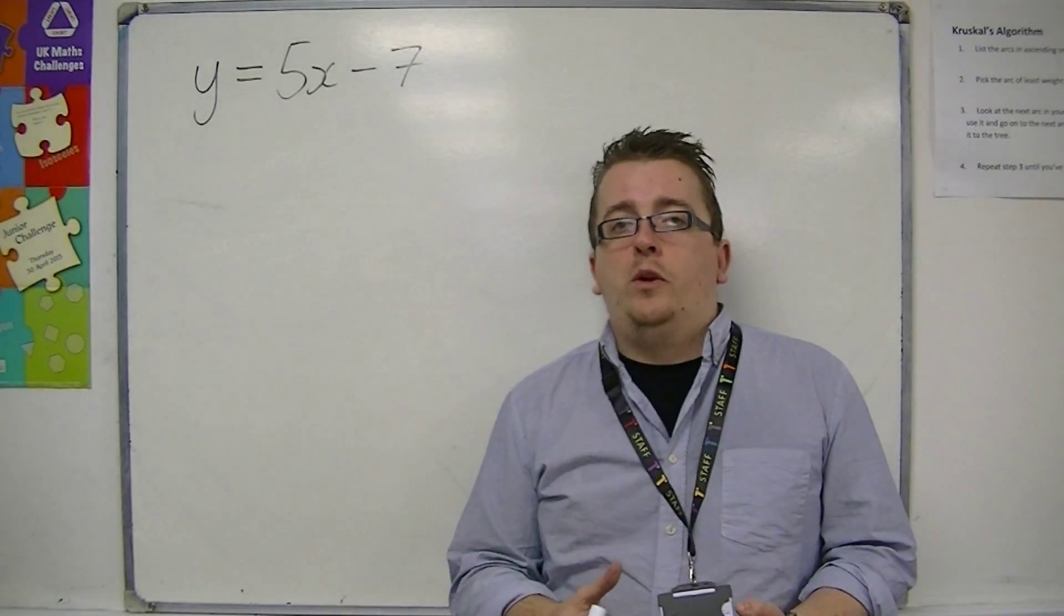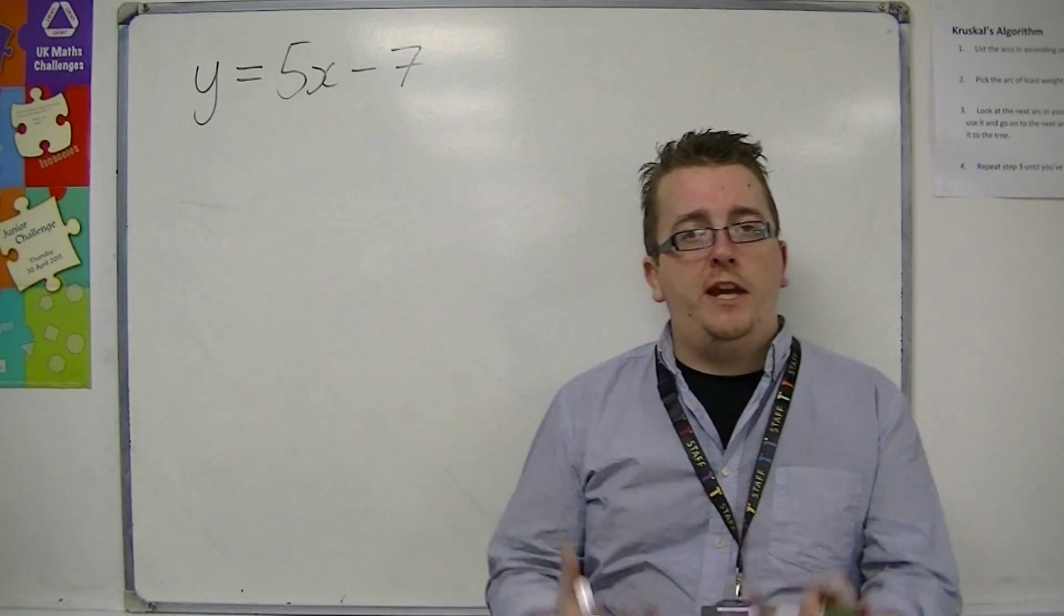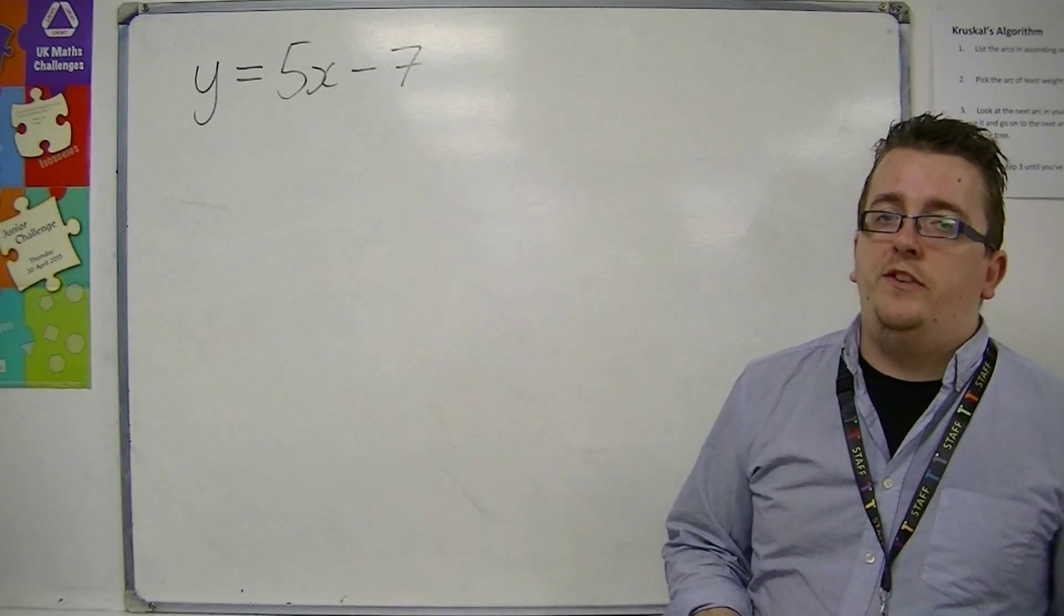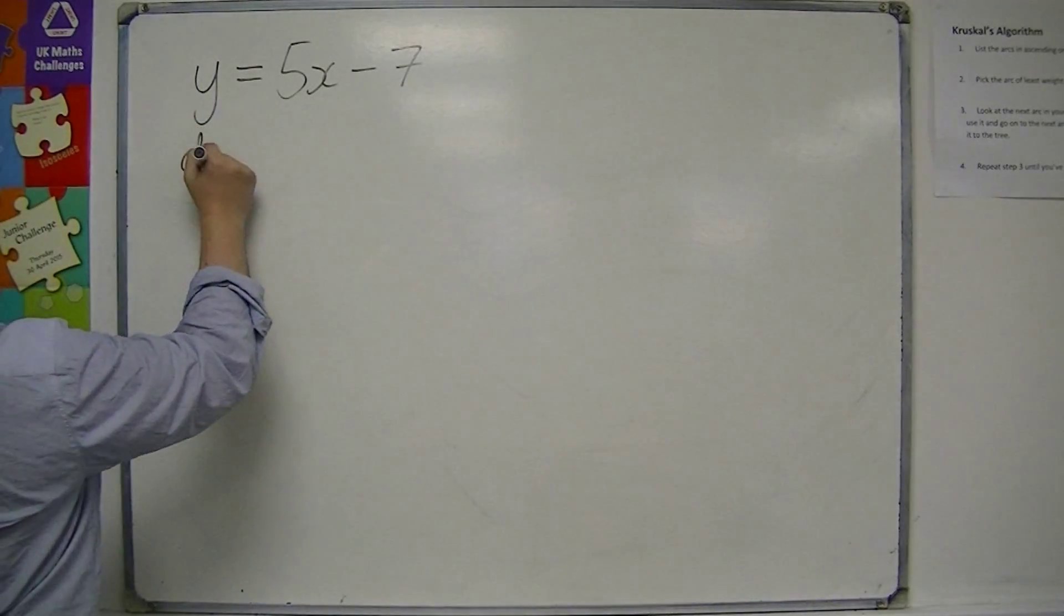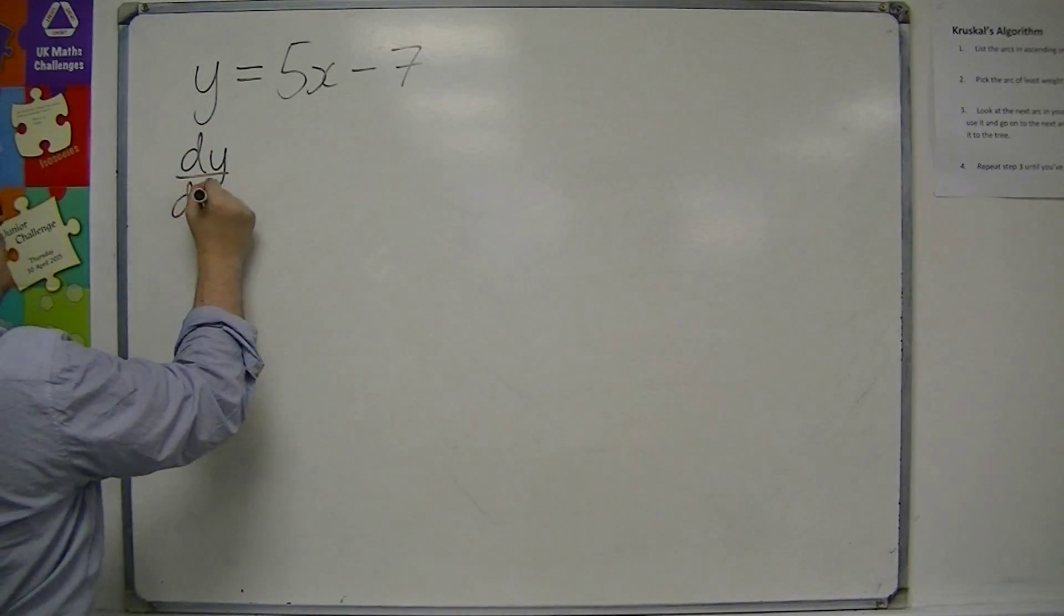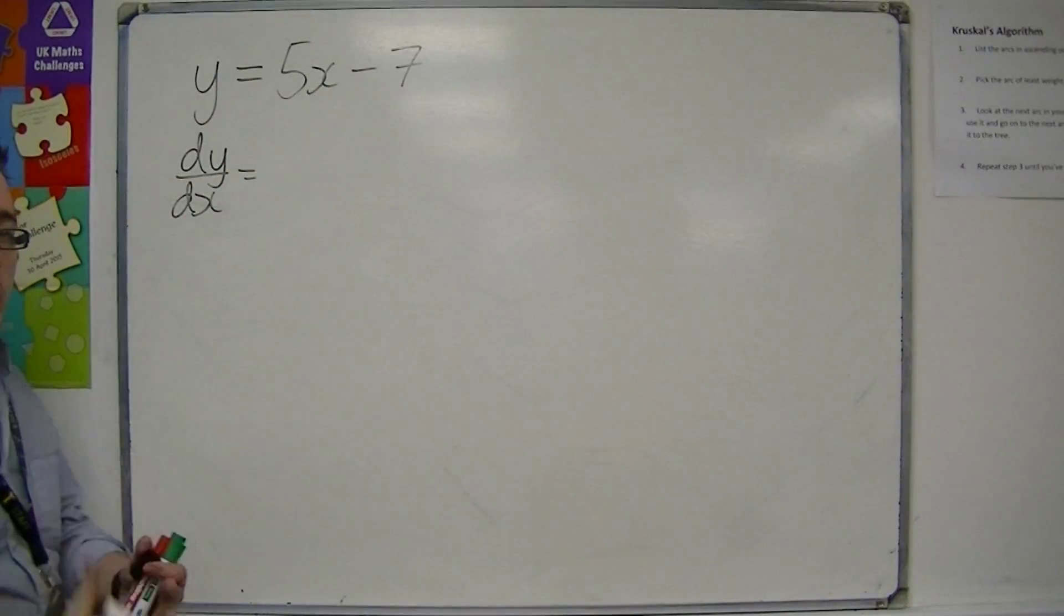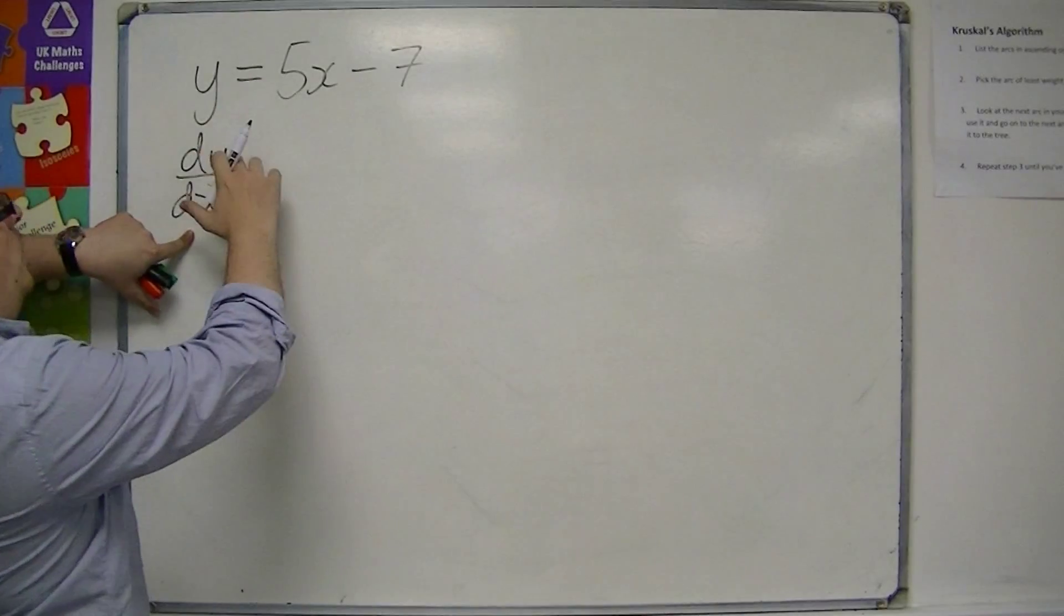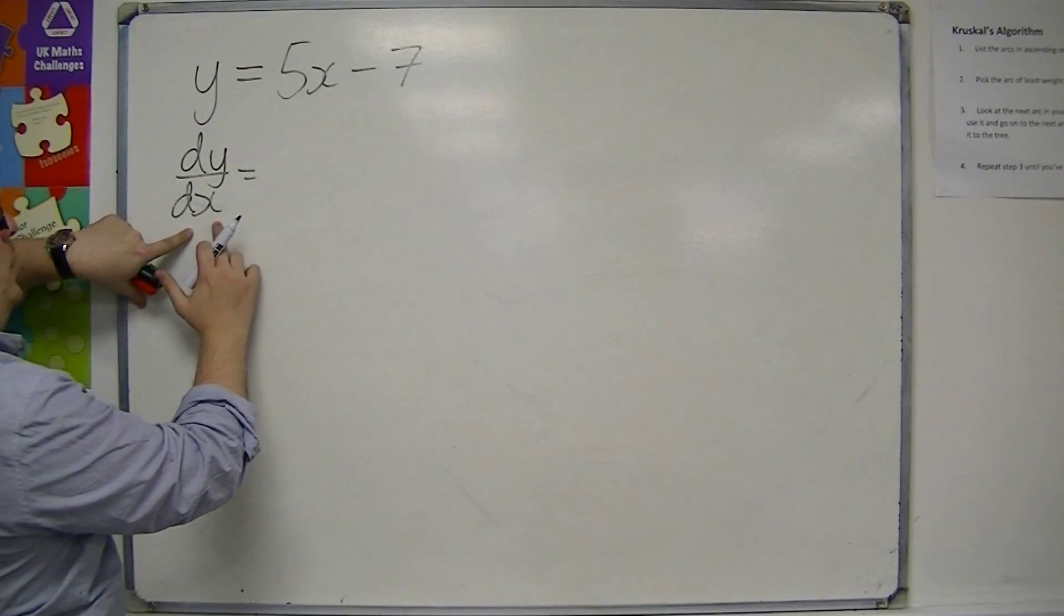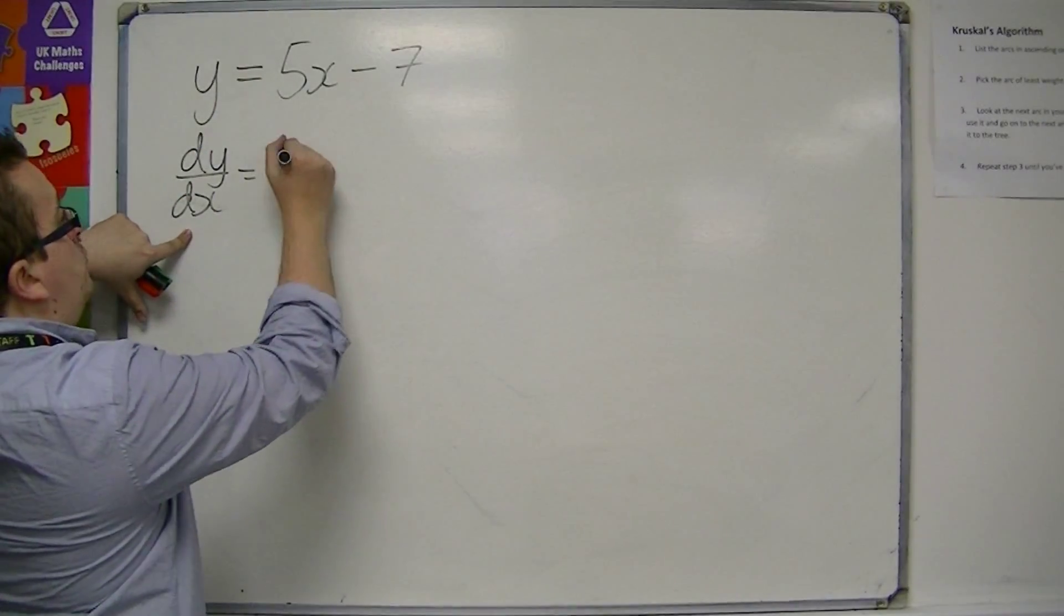Really what this video is all about is getting you used to the notation that we use to identify the gradient. So dy by dx is how we represent the gradient of this line, the rate of change, the rate that y changes with respect to x. And we would write that as 5.